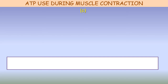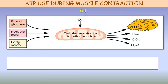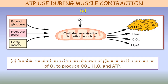The third and final source of energy is oxidative metabolism. This means combining oxygen with the end products of glycolysis and with various other cellular substrates to liberate carbon dioxide, water, and ATP.